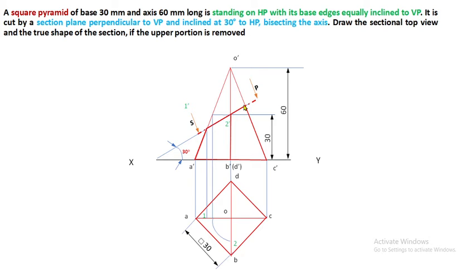Point O'C' is cut at this point — extend the projector until it cuts OC, the corresponding slant edge in the top view, and mark it as 3' in the front view and 3 in the top view. Finally, O'D' is likewise perpendicular like O'B'. Using the same distance already established, with O as center and this cutting point as radius, draw an arc to cut OD instead of OB. Point 4 is invisible because D is invisible. Extend the projector and fix point 4. Points 1, 2, 3, 4 are the exact cutting points of the section plane in the top view.